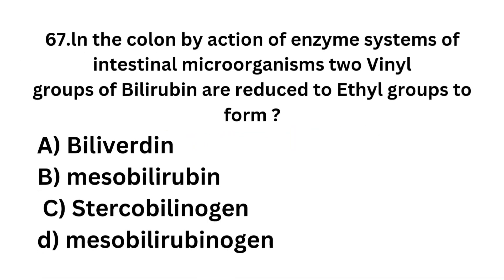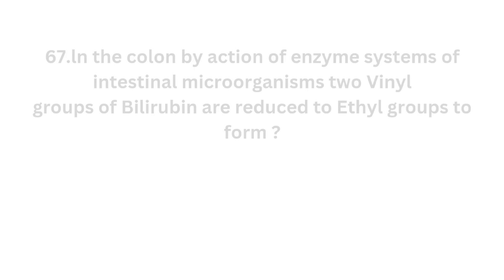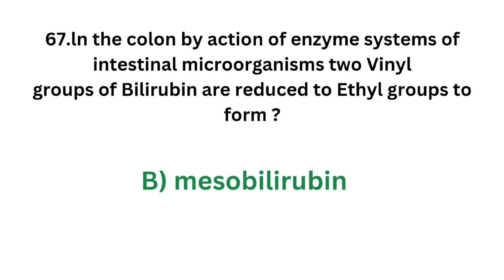Question number 67. In the colon, by the action of enzyme systems of intestinal microorganisms, two vinyl groups of bilirubin are reduced to ethyl groups to form what? Option A - Biliverdin; Option B - Mesobilirubin; Option C - Stercobilinogen; Option D - Mesobilirubinogen. The correct answer is Option B, Mesobilirubin. Two vinyl groups of bilirubin are reduced to ethyl groups to form mesobilirubin in the colon.